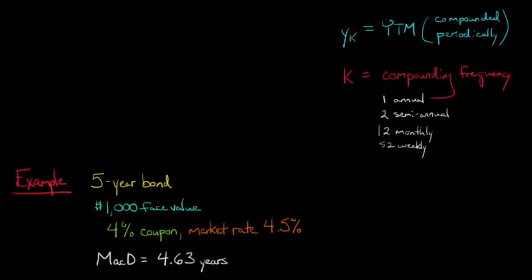Let's say we use the same example we did with the Macaulay duration. We've got a 5-year bond, and there's a $1,000 face value on the bond. It's got a 4% coupon, so that means based on the $1,000 face value and 4%, we're paying $40 in interest every year. Now the market rate of interest right now happens to be 4.5%.